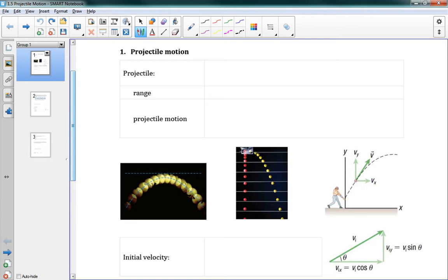So a few definitions here. A projectile is an object launched through the air, and it falls to the ground in a parabolic arc. By parabolic arc, I mean it follows the shape of a parabola, which is the shape of x squared.